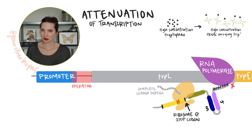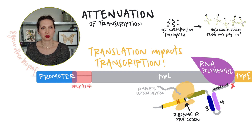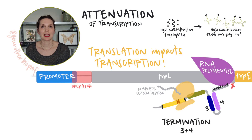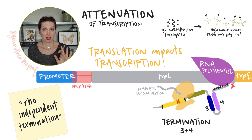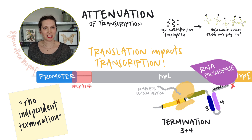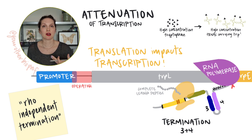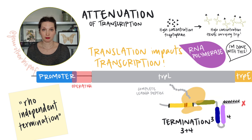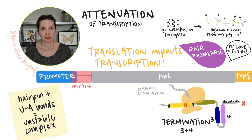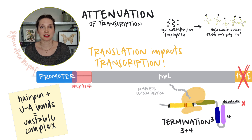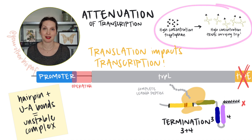Moving quickly through region one blocks region two, which allows regions three and four to form a hairpin. The 3-4 hairpin is a termination hairpin — a type of Rho-independent termination. Essentially, it causes instability and causes RNA polymerase to fall off, terminating transcription. So we're not going to get transcription of the structural genes that would help make more tryptophan, which is fine because there's plenty of tryptophan in the cell.